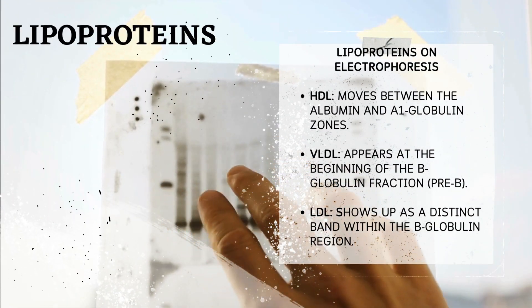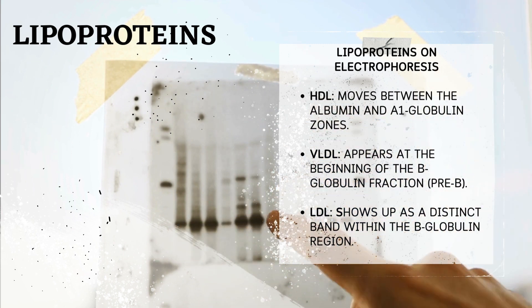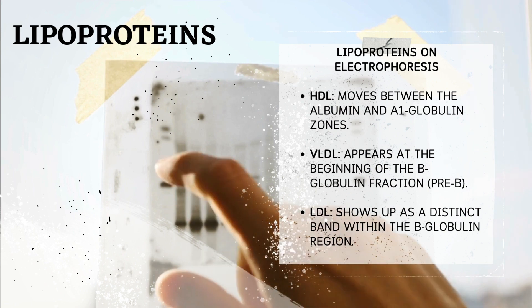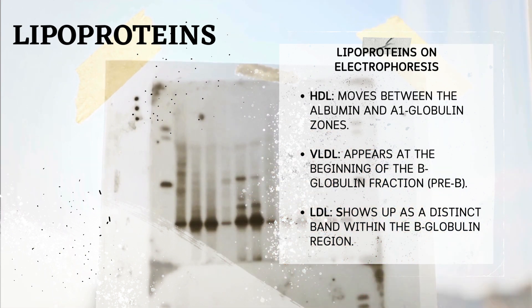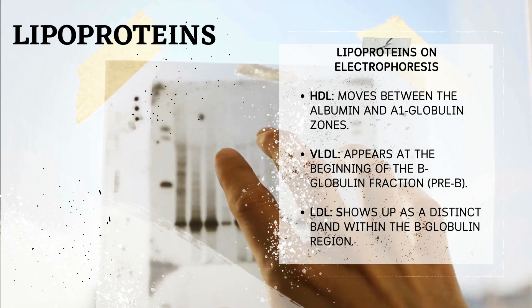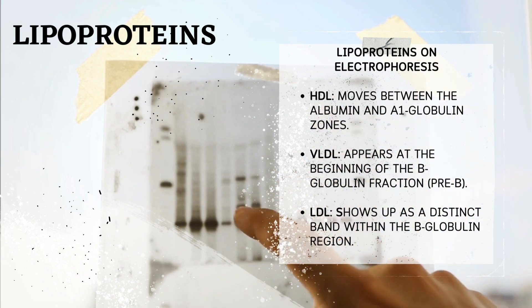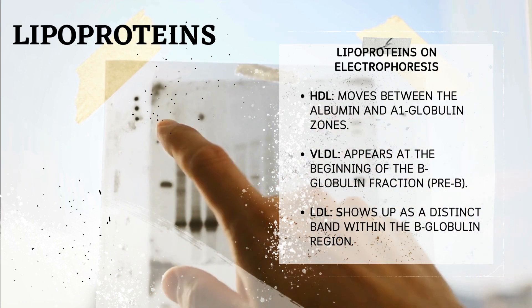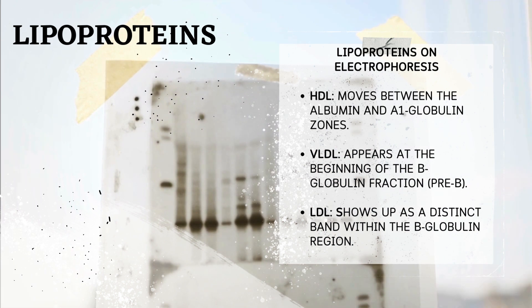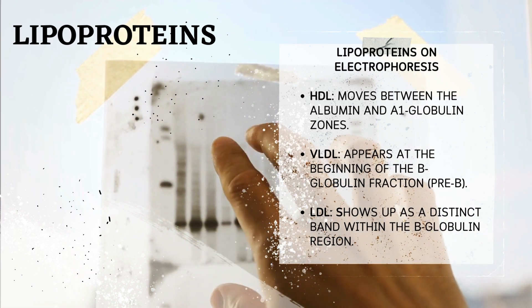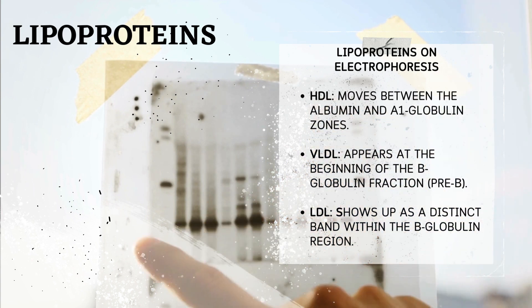Identifying lipoproteins on electrophoresis: Electrophoresis is a technique used to separate proteins in a blood sample based on their size and electrical charge. Lipoproteins can be visualized on protein electrophoresis (HRE) based on their migration patterns. HDL moves between the albumin and alpha-1 globulin zones. VLDL appears at the beginning of the beta-globulin fraction (pre-beta). LDL shows up as a distinct band within the beta-globulin region. By measuring these levels, healthcare professionals can gain insights into a patient's risk for cardiovascular disease.